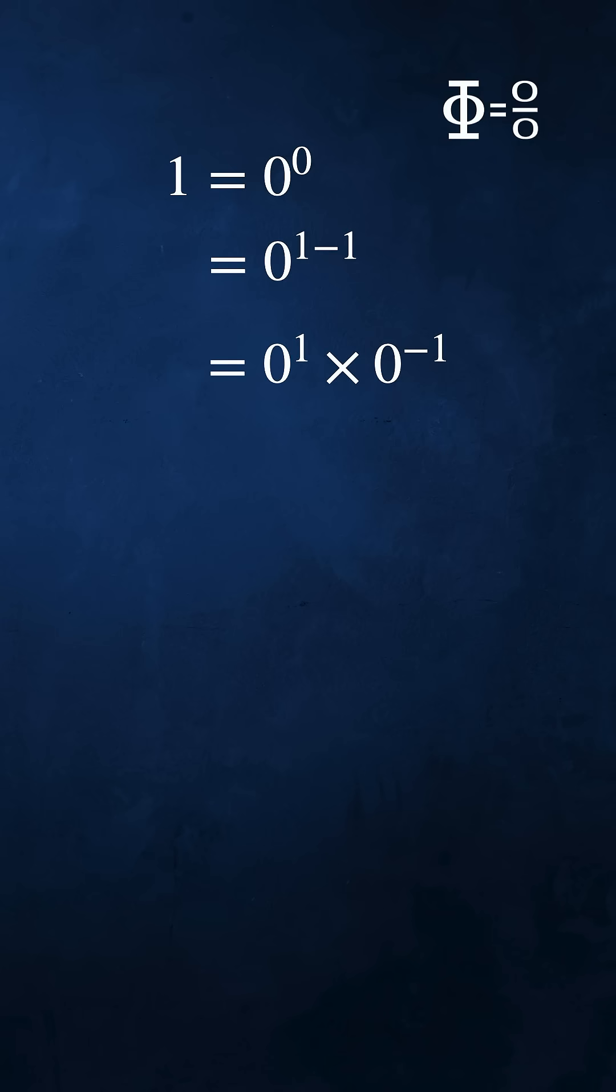Let's start again from here. 0 to the power 1 equals 0 but 0 to the power minus 1 is undefined. I've written undefined as bottom. Now 0 times undefined equals undefined and we've got the contradiction 1 equals undefined.